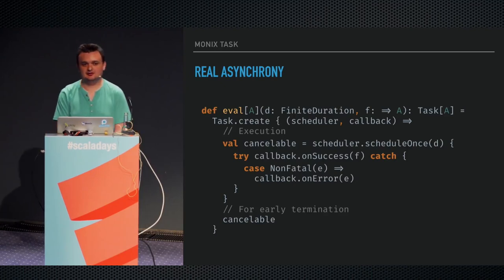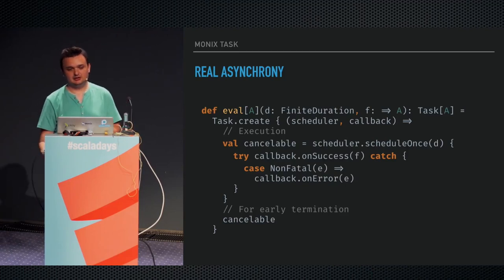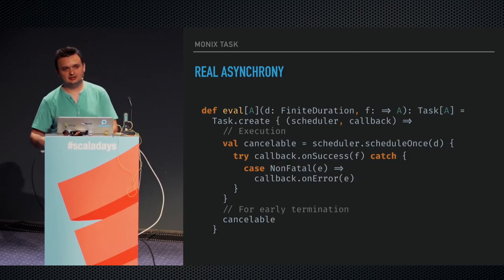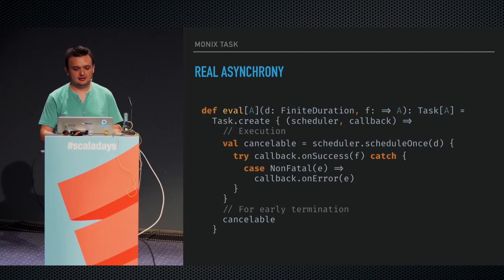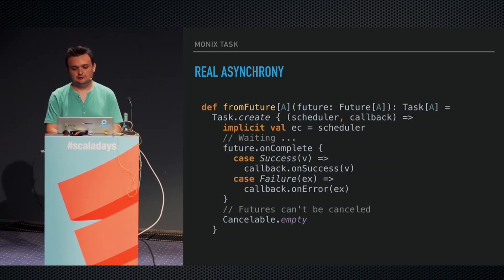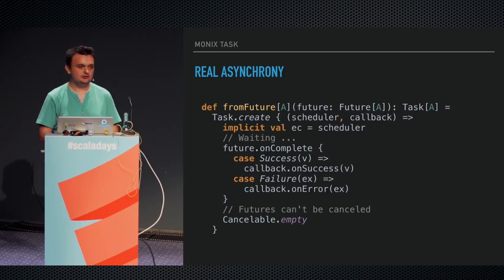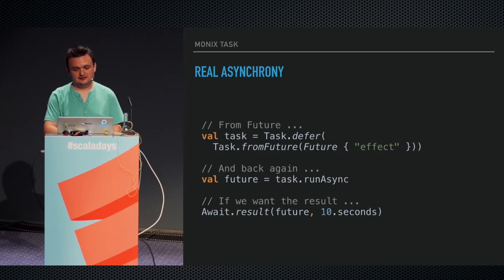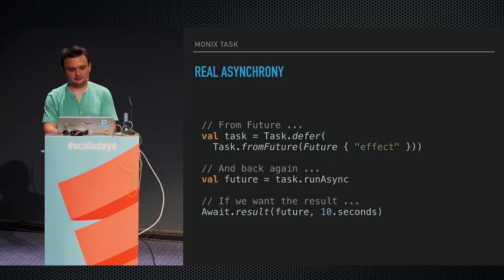To turn an asynchronous process into a task, this is equivalent to using a promise — you give it a function that can execute on run async, and that function has a callback injected which can be called with the final result of the computation. In this case we use the scheduler to delay execution of a function. It's cancelable, so you can return a cancelable reference. Turning a future is similar — you use on complete, and when it runs you call your callback with the success or error. Futures can't be canceled, so we're not going to pretend we can. Future interoperability is pretty good — you can turn futures into tasks and vice versa.